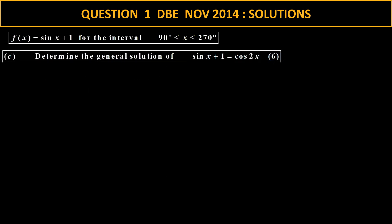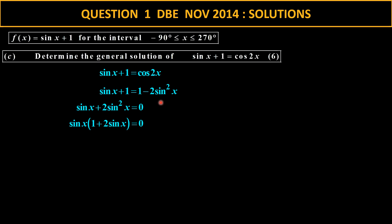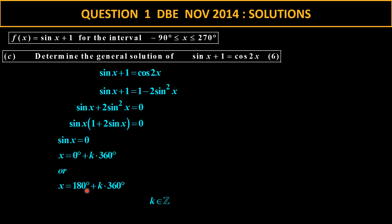Now we want to determine the general solution. We start with cos of 2x as an identity, and because we have sine we choose 1 minus 2 sine squared x. We transpose everything to the left side and simplify, then to get a zero product we factor it, and we get sine of x equals zero. Sine is zero at 0 and 180. We add k times the period for the general solution, and k is an element of the integers.